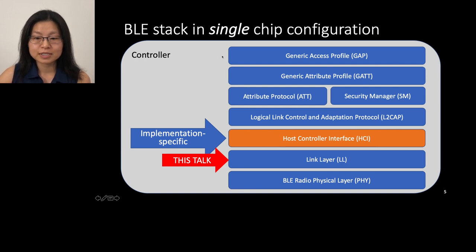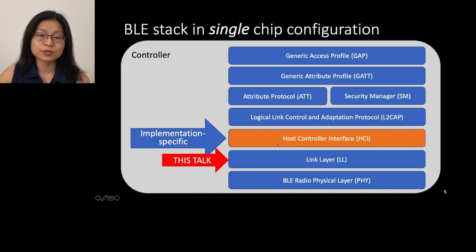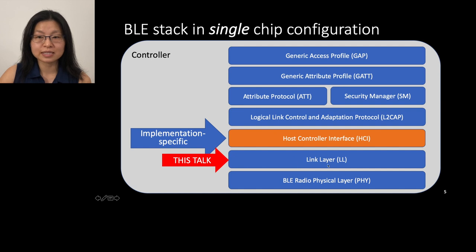For the single chip configuration, all protocols are located on the BLE controller. But for this configuration, the specification does not define how HCI should be implemented — it is up to the implementer. They can use a memory queue or choose not to have an explicit HCI layer. I will focus on the link layer.